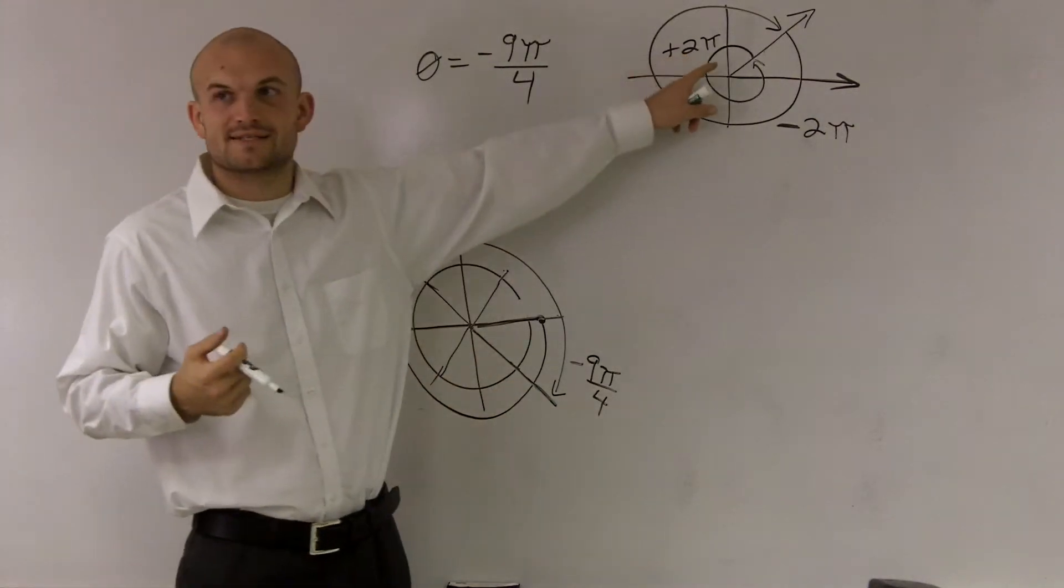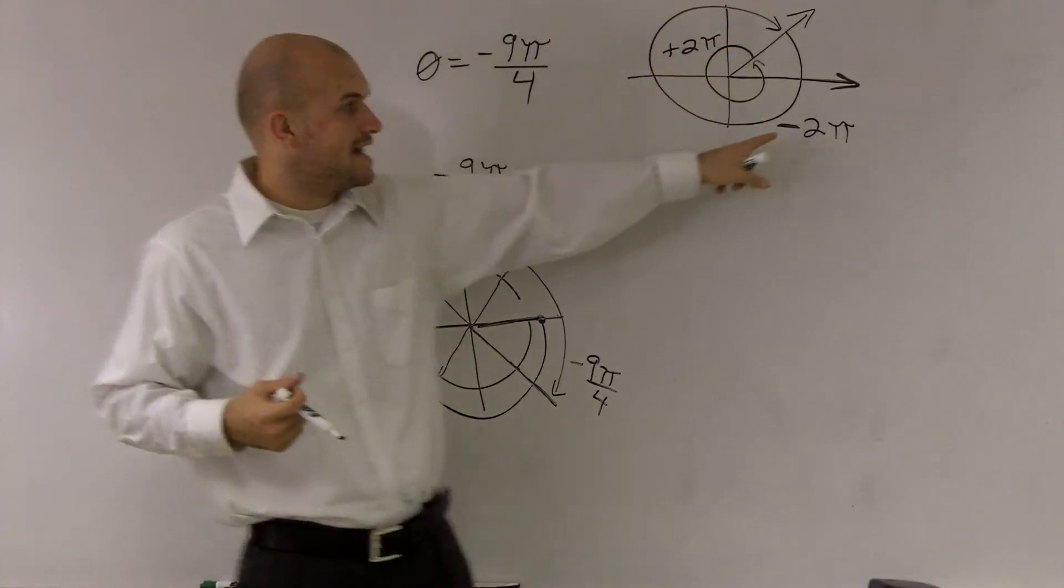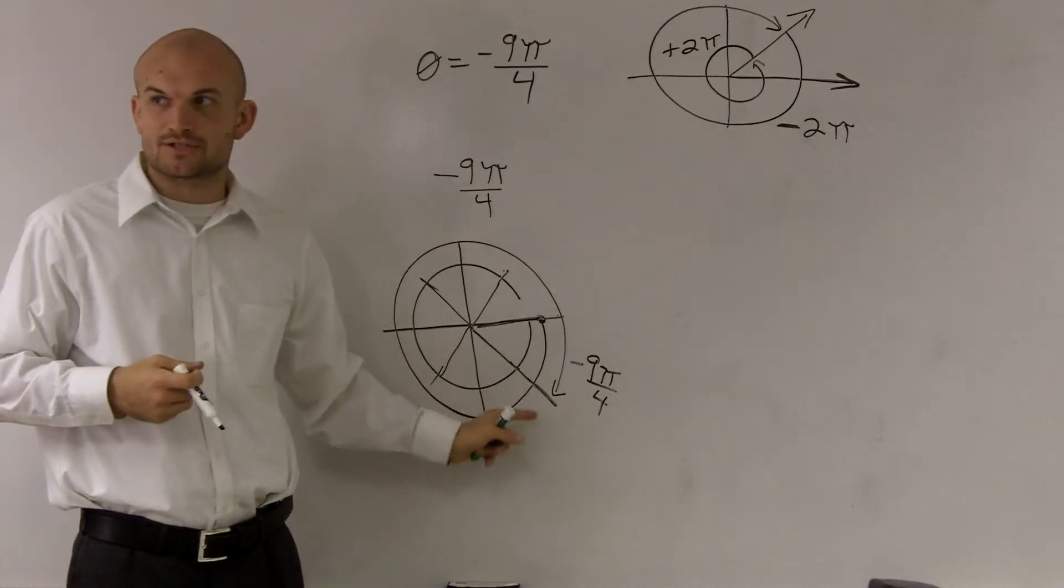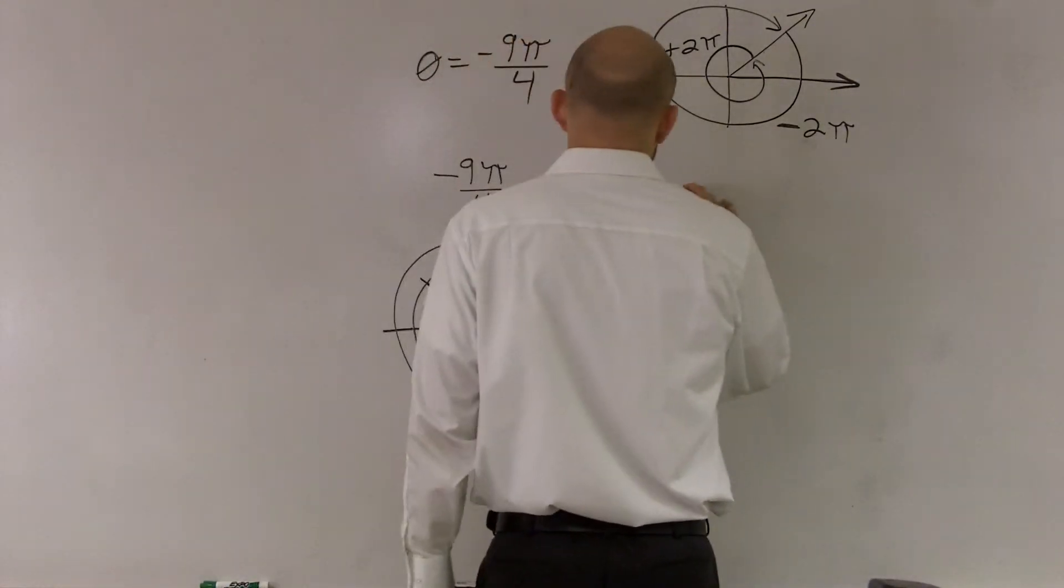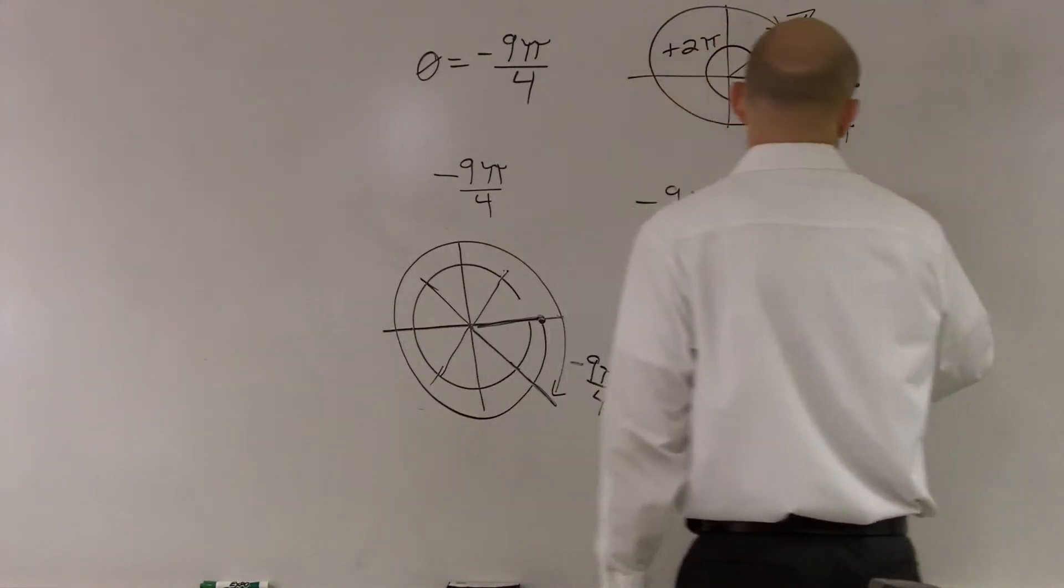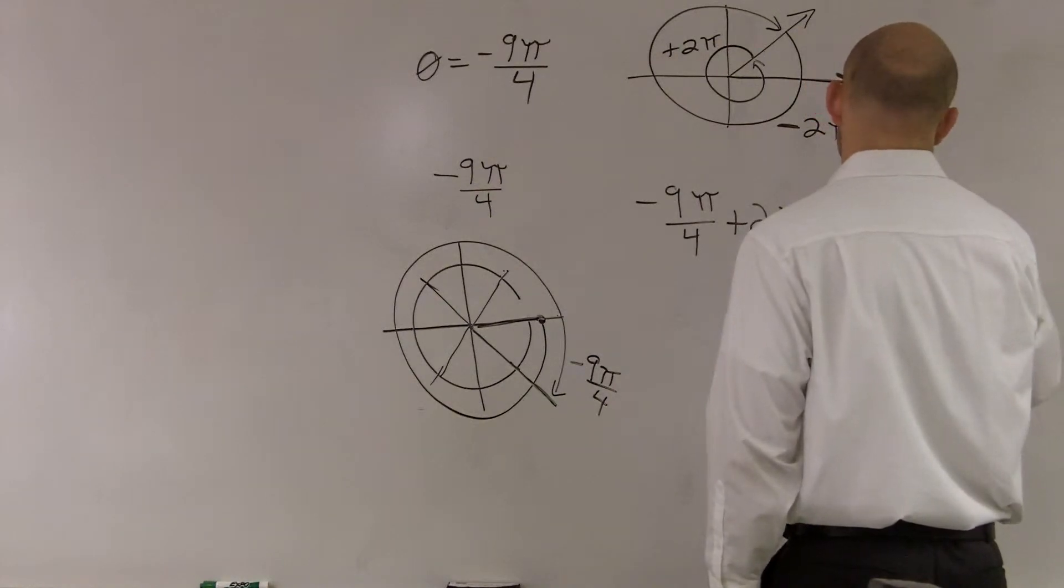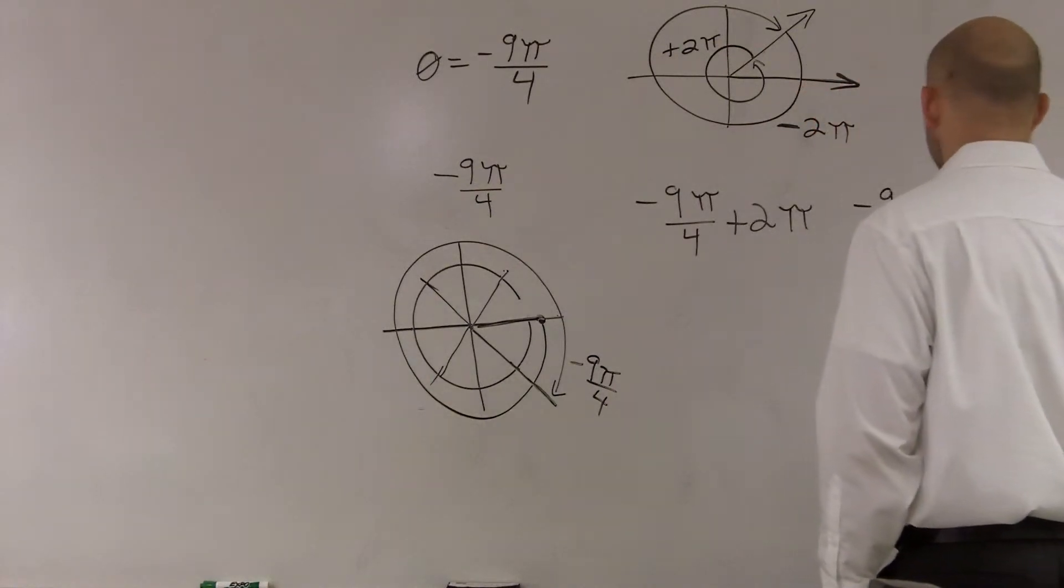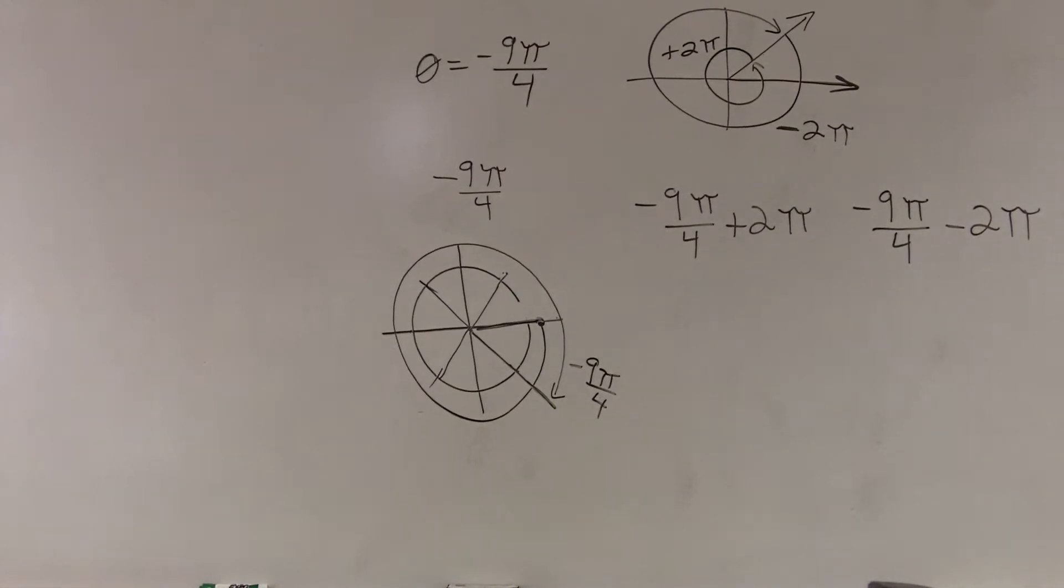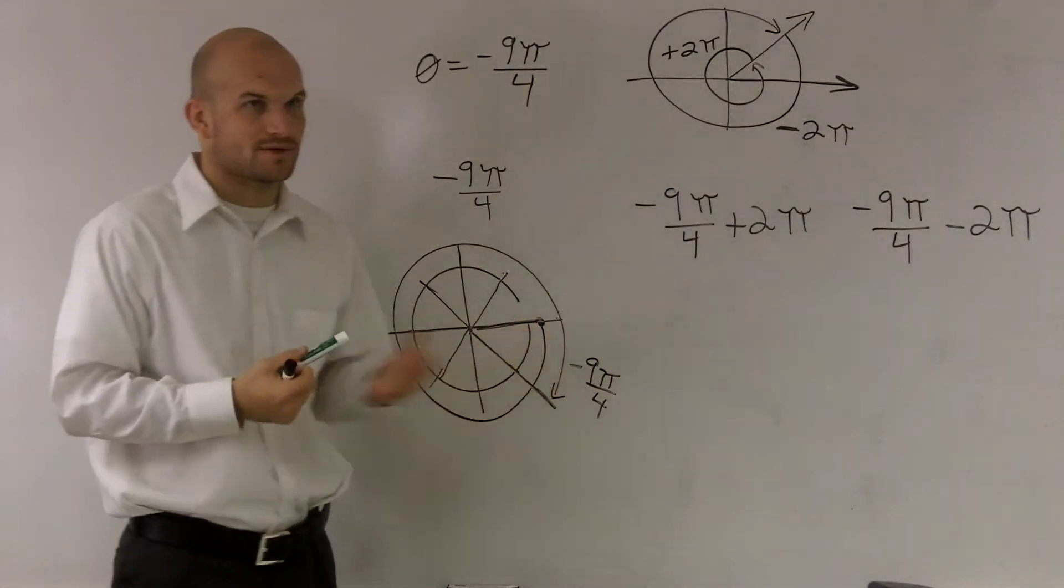I'm going to go back to this example. If I add 2π to my angle and if I subtract 2π from my angle, it's going to take me back to my terminal side. So what I do is negative 9π over 4 plus 2π, and I do negative 9π over 4 minus 2π. That's going to give me now two different angles that are going to have the exact same initial and terminal side.